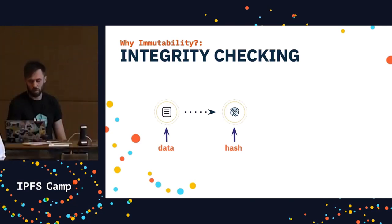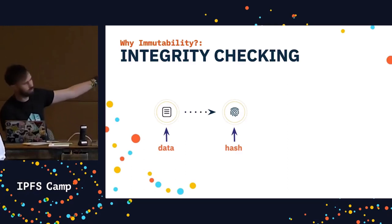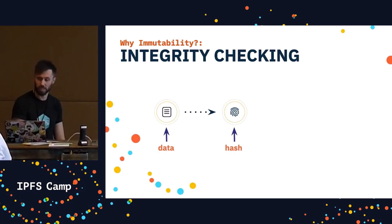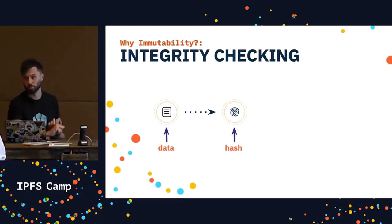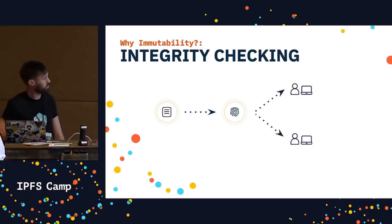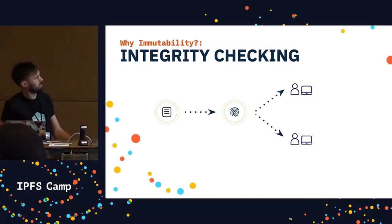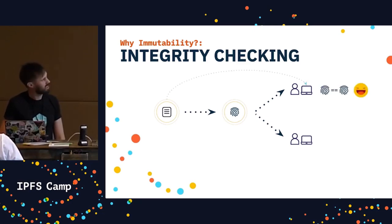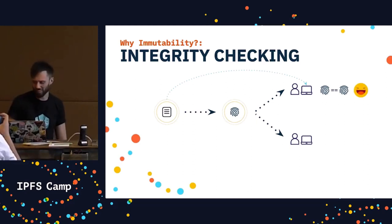Resource integrity checking is one way to ensure that data you ask for is the data you've got. The idea is to calculate an identifier for the data from the data itself. The identifier is called a hash, and we use cryptography when computing the hash to ensure certain properties like uniqueness and determinism. Once we've got this hash, we can share it with the rest of the world, and when someone gets hold of that data, they also calculate the hash and check that they match. If they do, you've got the data you asked for.